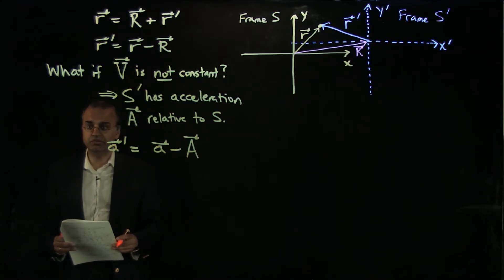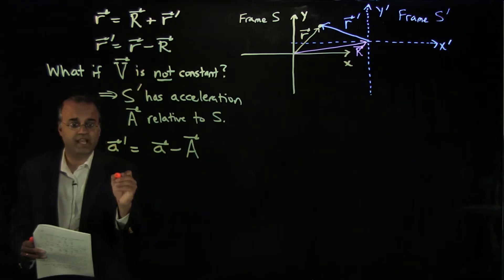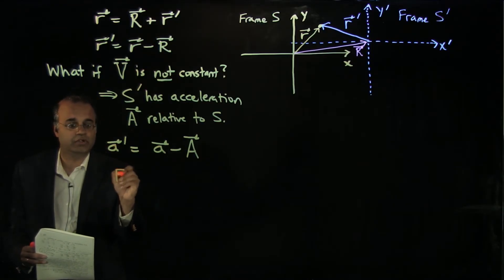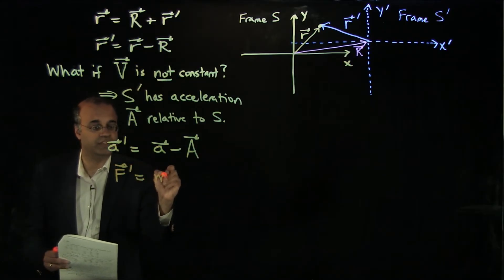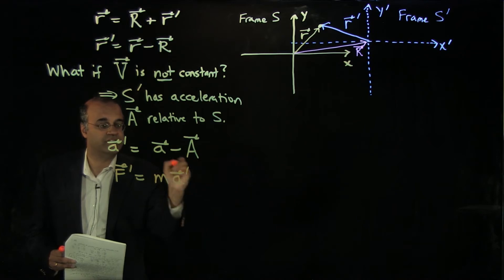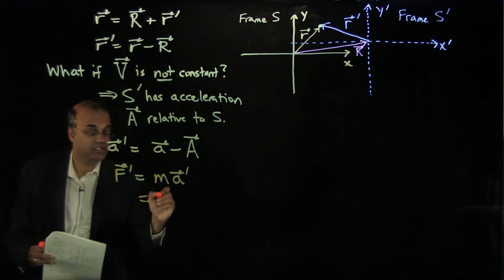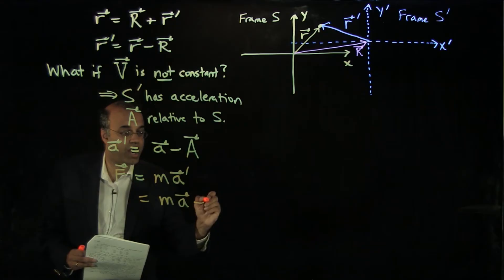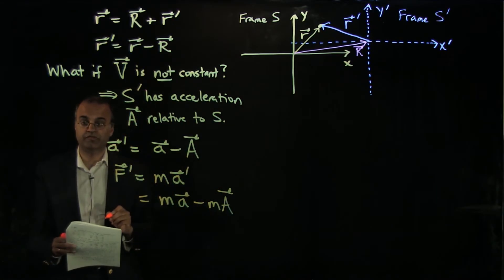Now what that tells us is that Newton's laws are going to look a little different. So now the force measured in frame S prime, I'll call that F prime, we expect that from Newton's second law to be the mass times the acceleration a prime. But that is the mass times the acceleration measured in frame S minus m capital A, the acceleration of frame S prime relative to frame S.